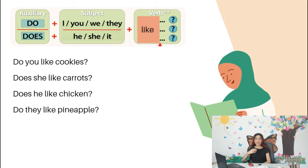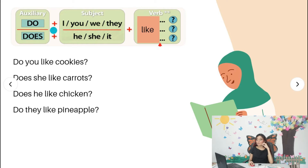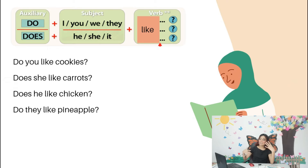Today we're reviewing how to make questions in present simple using the verb 'like' — for when you want to know if your friend or your relatives like a food or not. We need to start always by using the auxiliary 'do' or 'does.' Remember, we only use 'does' when we have the personal pronouns he, she, or it, and we use 'do' with I, you, we, and they.